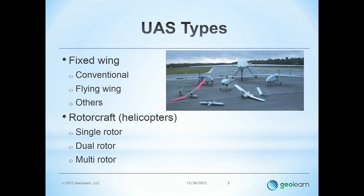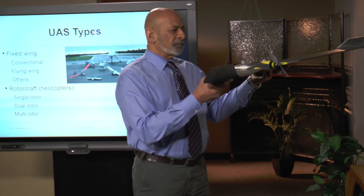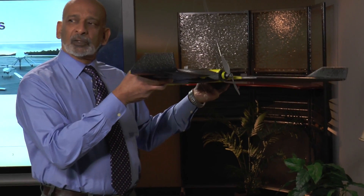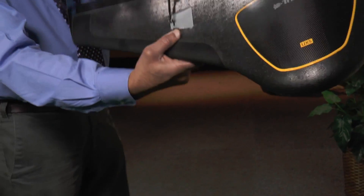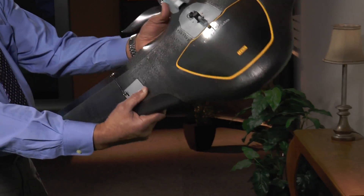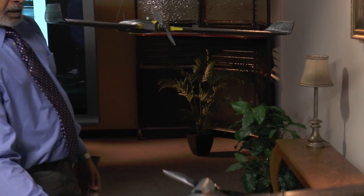There are many different types of unmanned airborne systems. The two primary categories would be fixed-wing and rotorcraft. Let me walk over here and point out a couple of fixed-wing aircraft. This is a fixed-wing aircraft, meaning the wings don't flap, they don't turn. I have another one here on the table — very similar in design, a little bit bigger than the other one.